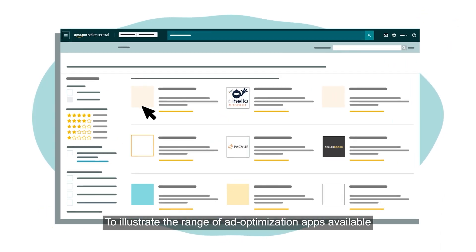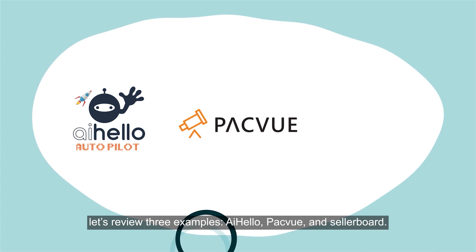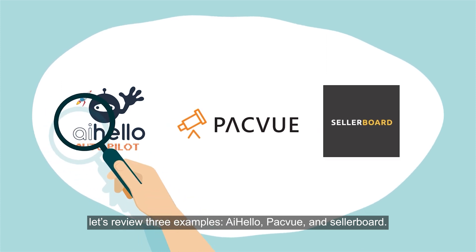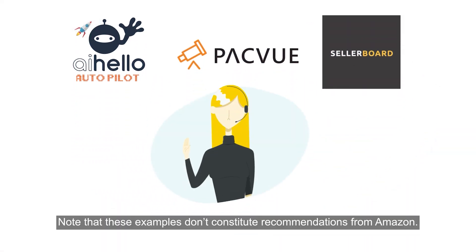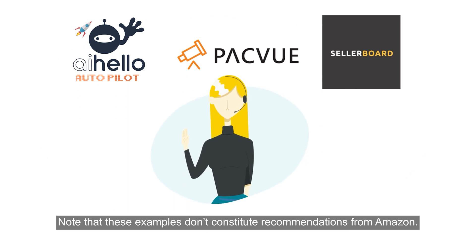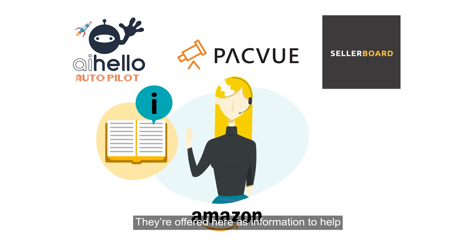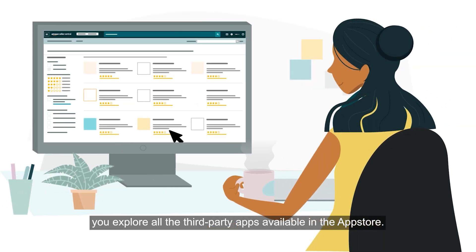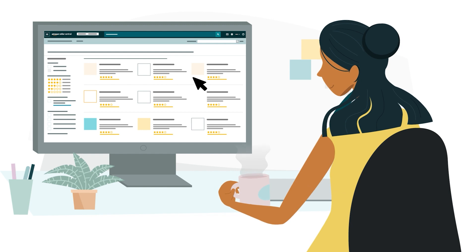To illustrate the range of ad optimization apps available in the Selling Partner App Store, let's review three examples: iHello, PackView, and Seller Board. Note that these examples don't constitute recommendations from Amazon. They're offered here as information to help you explore all the third-party apps available in the App Store.